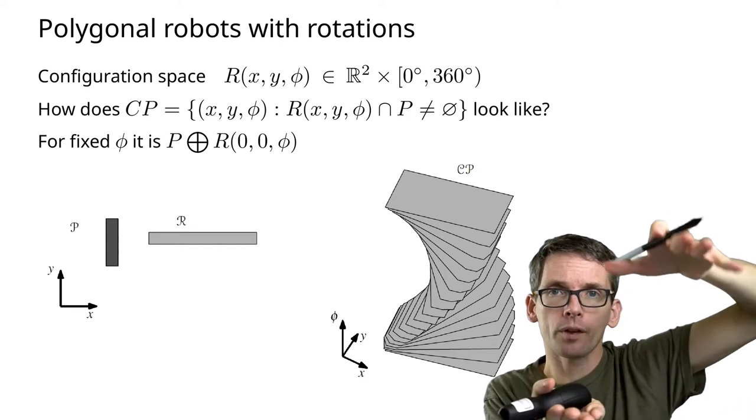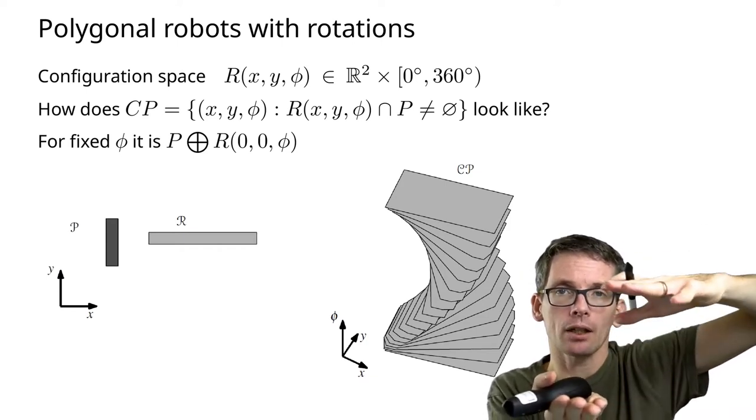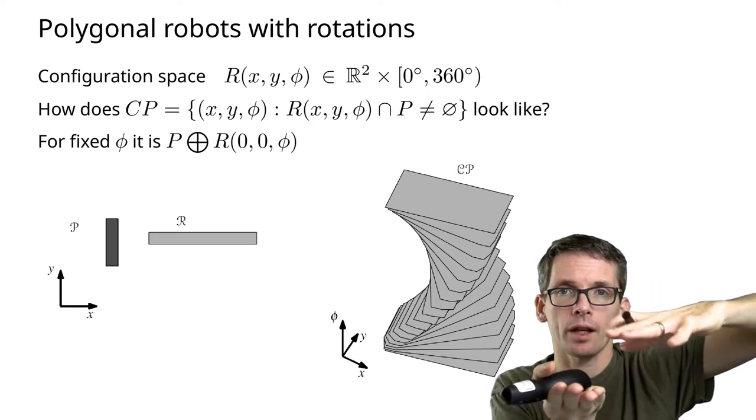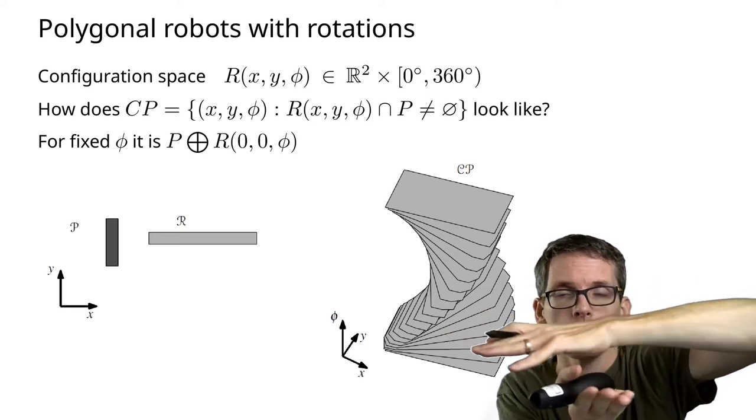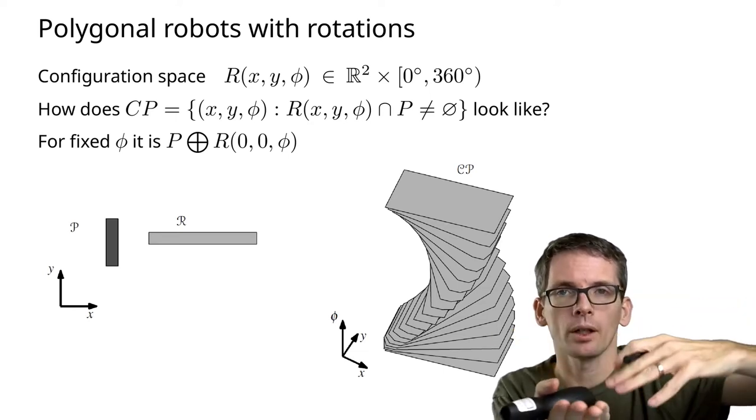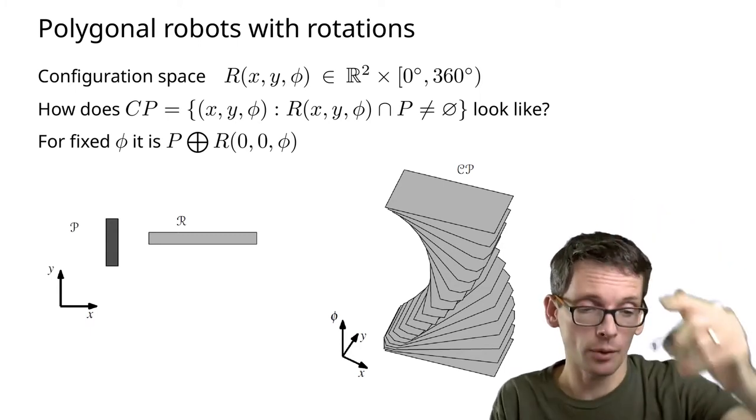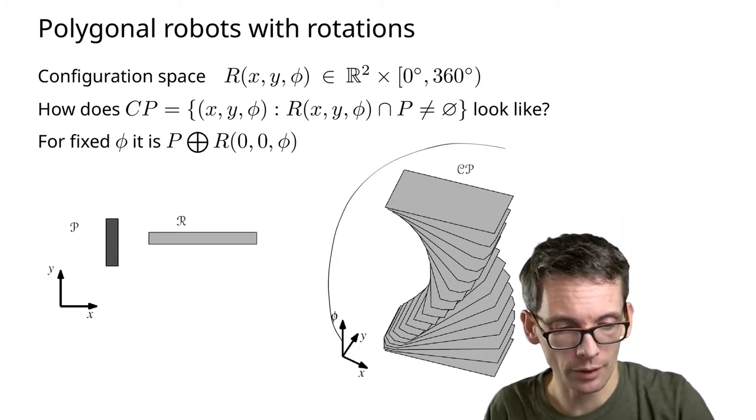If you move in the dimension of the rotations, your robot slightly rotates and you get the forbidden space of that slightly rotated robot and that obstacle. This construction, if you think of it slice by slice, will look like something like this.